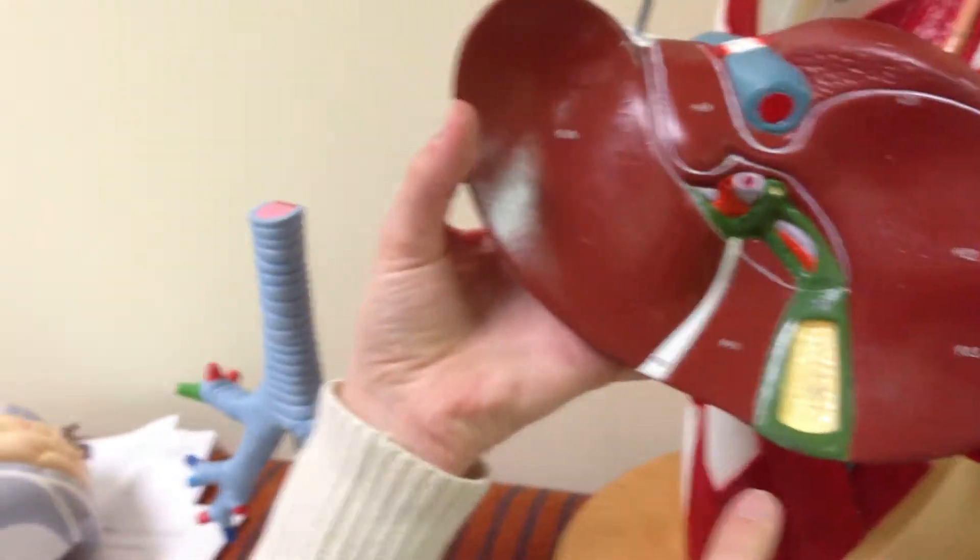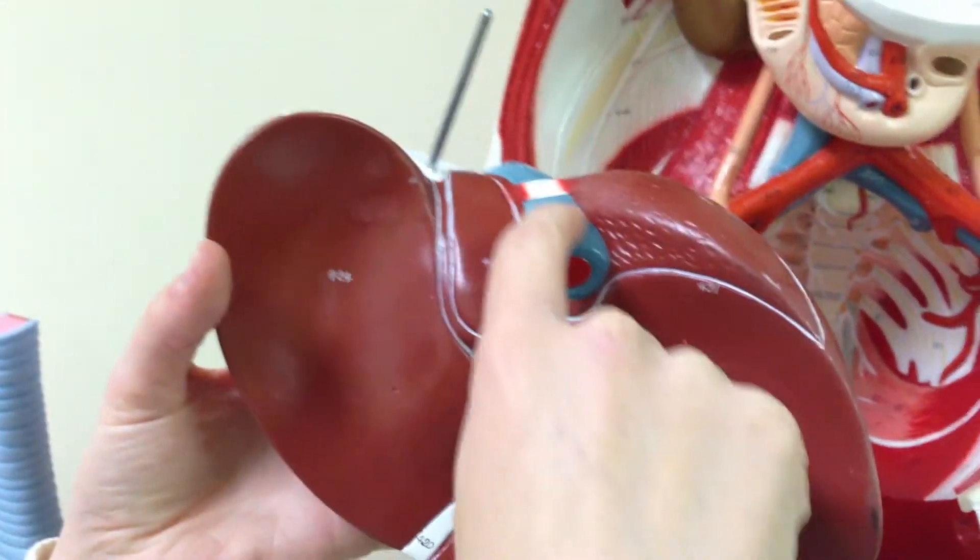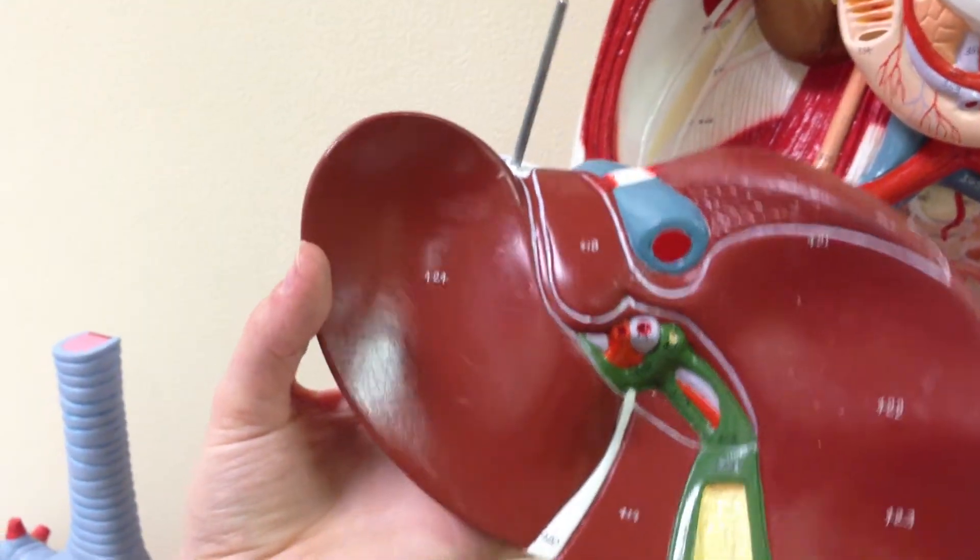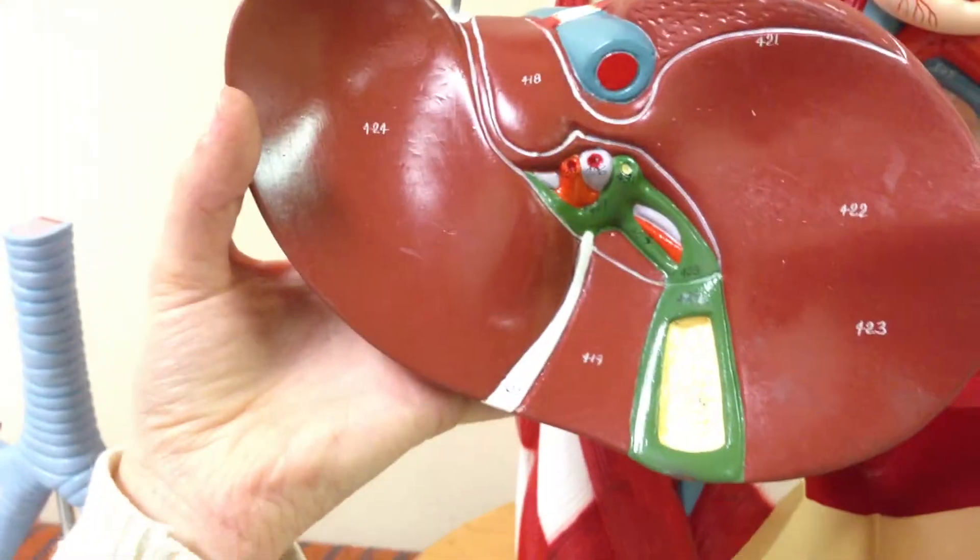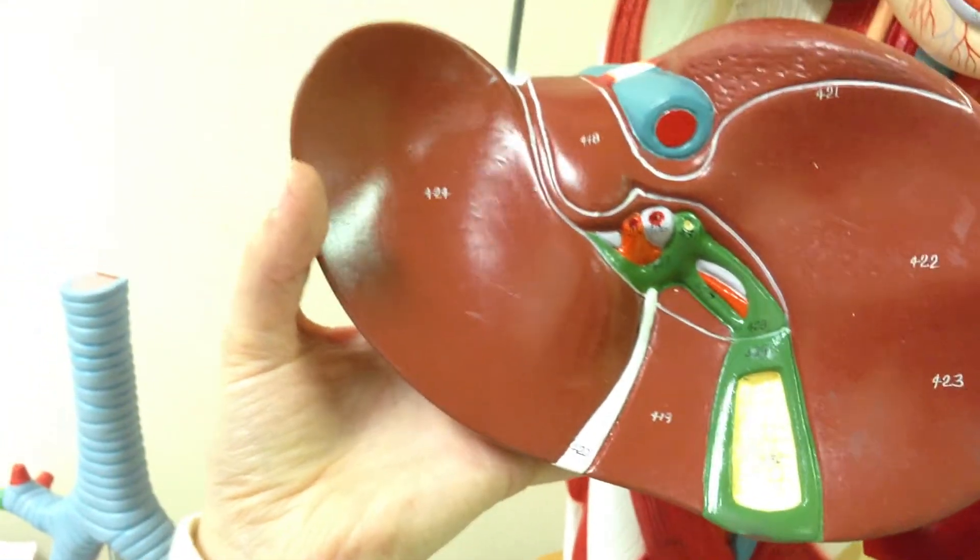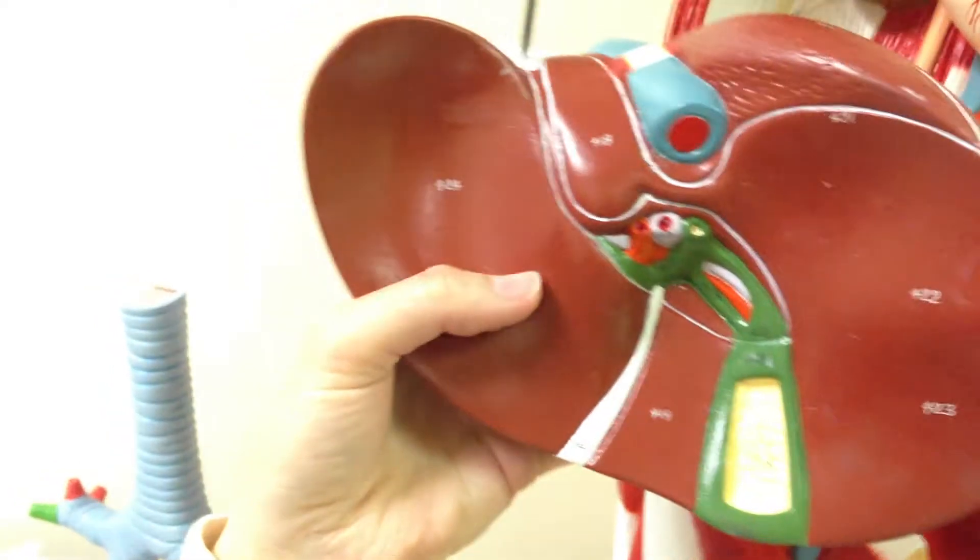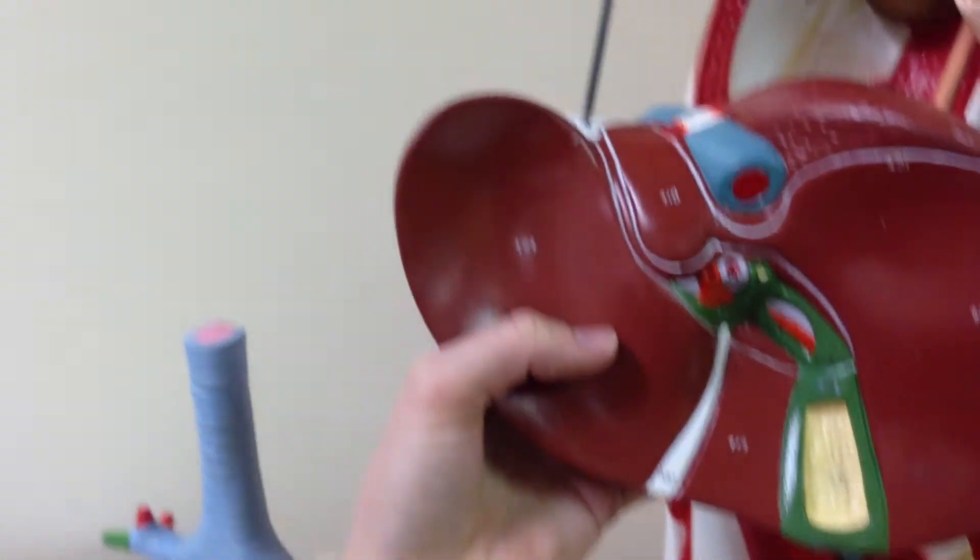And so again this is the gallbladder, and this is the inferior vena cava which is taking blood back to the heart.